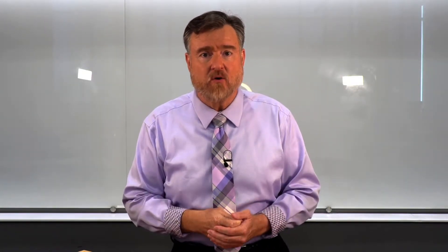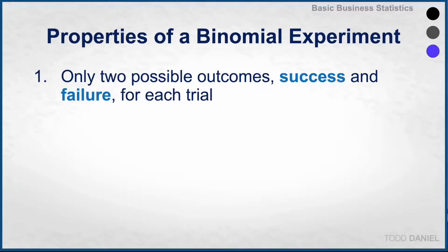What are the qualities of a binomial distribution? There are only two possible outcomes — success or failure — for each trial. For every flip of the coin you either get heads or tails. In this case it was tails.